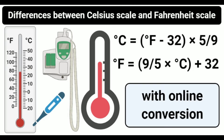The region between these two temperatures is divided into 100 equal parts so that each part equals 1 degree Celsius, 1°C. Thus, in the inverted form of the Celsius scale, the freezing point of water is 0°C, and the boiling point of water is 100°C.